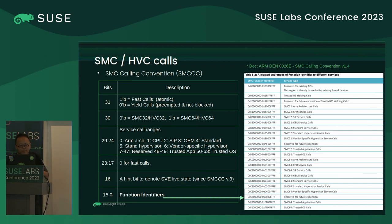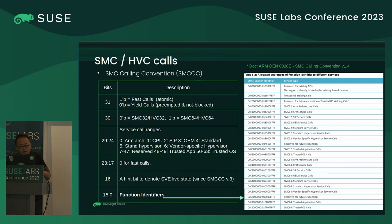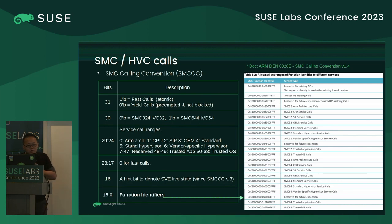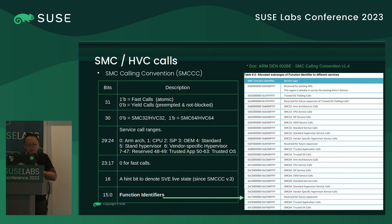SMC calls can be categorized by functionality. For calls toward a hypervisor, it could be an HVC call. The most important field is the function identifier, which is used by the SMC transport to activate the registered handler in the secure world firmware space. For example, in NXP S32G, it uses the SiP service call to identify SCMI requests coming from clients.